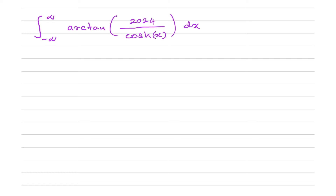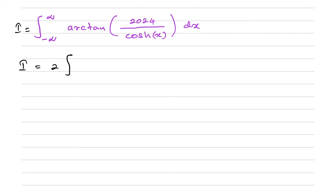First of all, if we take this function f(x), we can see f(x) = f(-x), which means this is an even function. Therefore, if we call our integral I, then I is equal to two times the integral from zero to infinity — not minus infinity to infinity — because this is an even function.